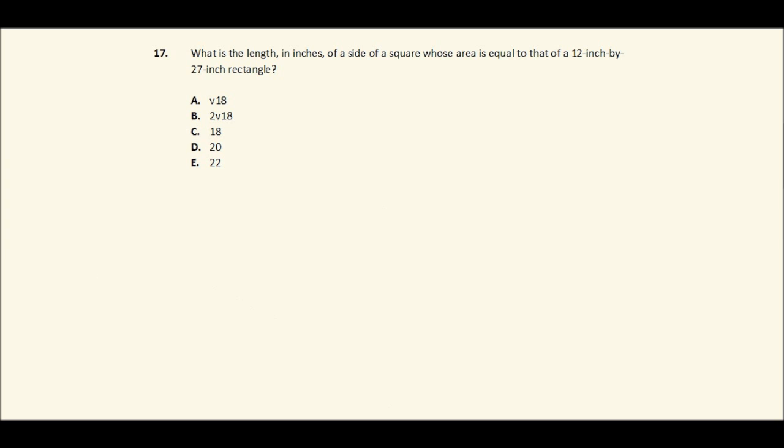Alright, so we're talking about a rectangle here. It's got the sides of 12 and 27, right? And then there's some square that also happens to have the same area. We'll call that X for now.